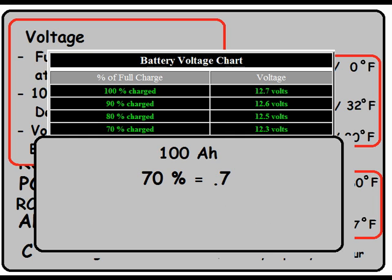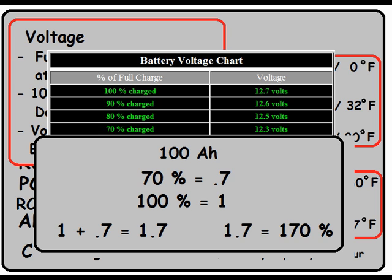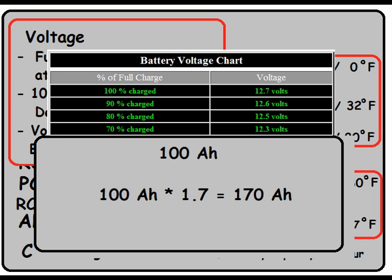For all you math whizzes, let me show you a real quick shortcut. We know 0.7 will give you 70%, so 100% would be the same as multiplying by 1. 1 plus 0.7 gives you 1.7. So now we know if we multiply by 1.7, we'll get our original number plus a 70% buffer. We got the same 170 amp hours as we did with our original mathematics, with fewer steps.